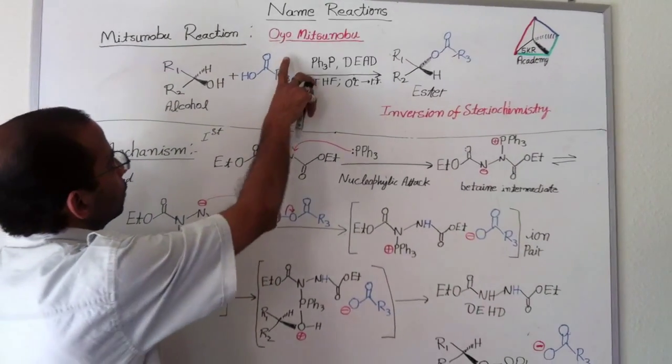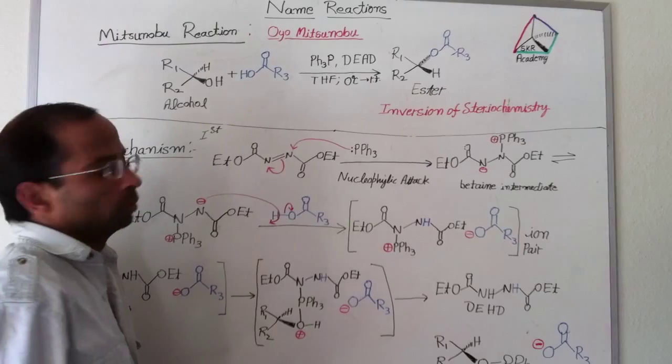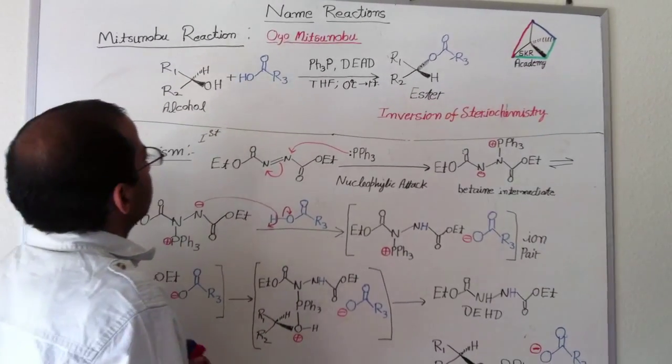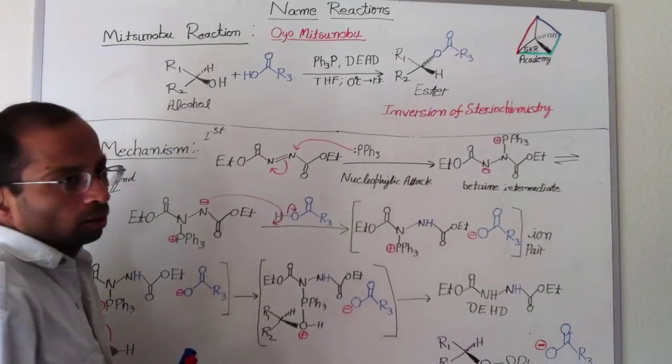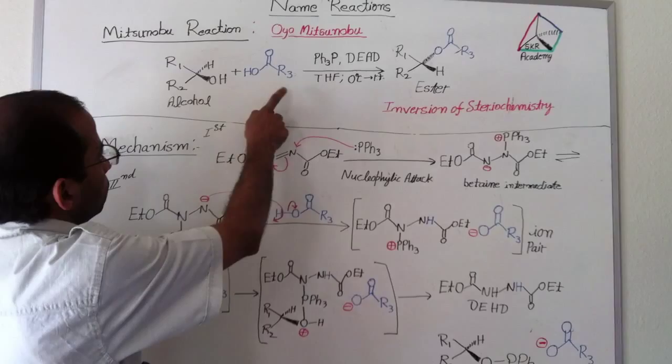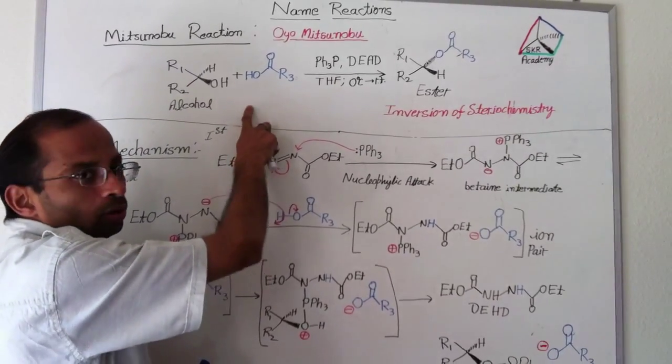Mitsunobu reaction was first discovered by Oyu Mitsunobu in around 1967. This is a very good reaction of alcohol. Mainly alcohol reacts with acid or phenols.